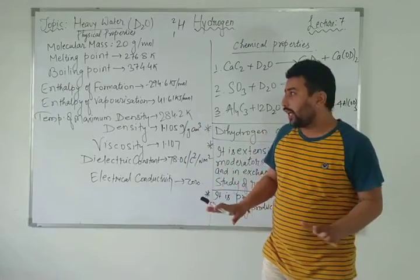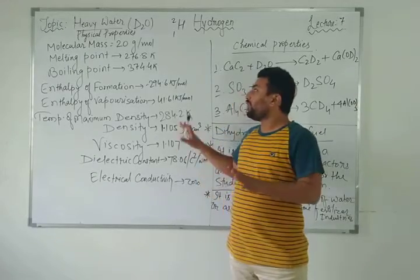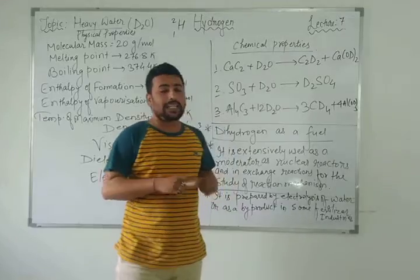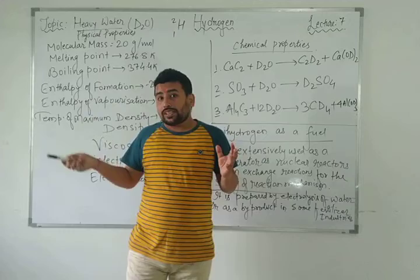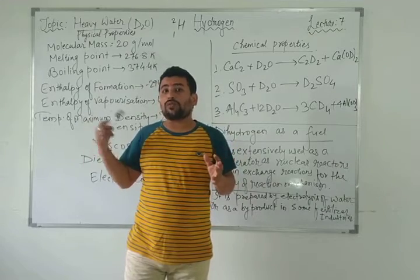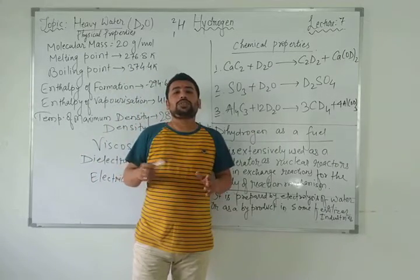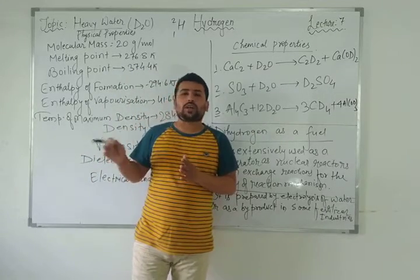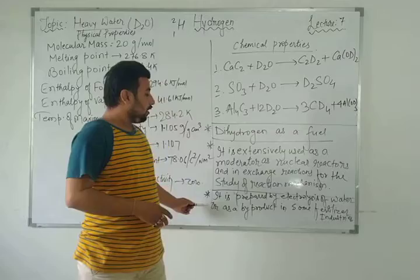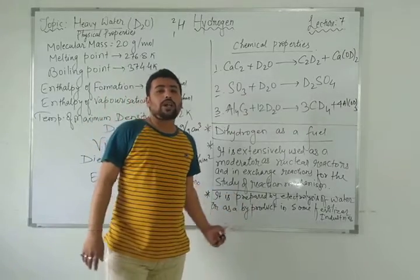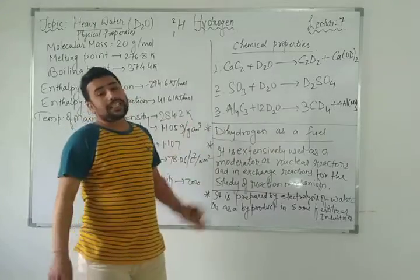No need to worry — remember each and everything perfectly. Regarding preparation: deuterium oxide is prepared as a byproduct of fertilizer industries. When fertilizer is prepared, D₂O comes as a byproduct, not a main product. So in summary, it is prepared by the electrolysis of water or as a byproduct of the fertilizer industry.